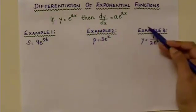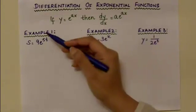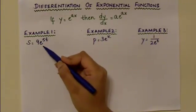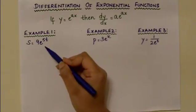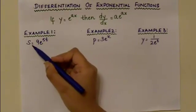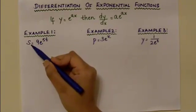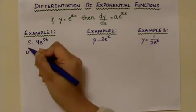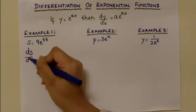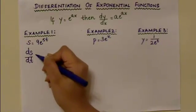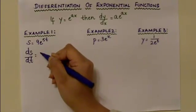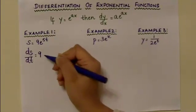There are three examples to discuss. The first example is s equal to 9e to the power of 5t. You are differentiating equation s with respect to the variable t, so the differential coefficient becomes ds over dt. The 9 is the coefficient of the whole function, so it remains as it is.